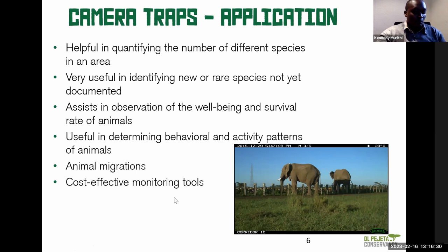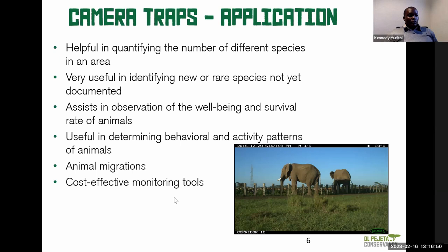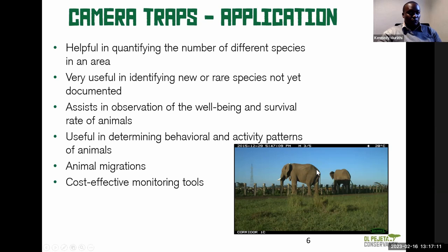Camera traps can be applied in research to help quantify the number of species in an area and identify new or rare species. You can also observe the well-being of animals. For example, looking at a photo, you can clearly see if an elephant doesn't have any issues. If you have a zoo and want to monitor animal well-being, you can deploy camera traps in various locations and the captured photos can inform you on their condition.